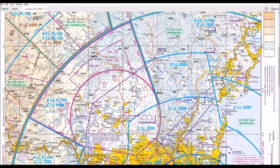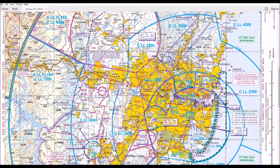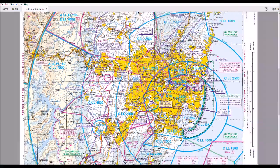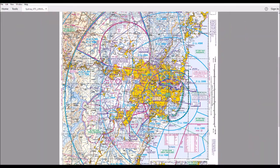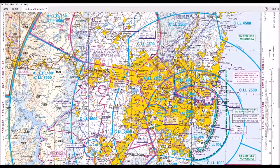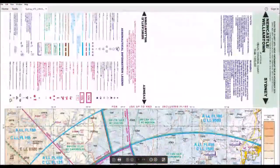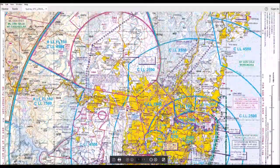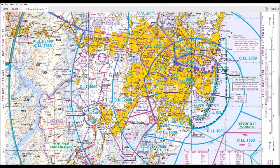Let's scroll down a bit and have a look at a very obvious feature of this chart. You will notice that there are circles coming out from Sydney airport. There's no issue figuring out who's the center of attention — it's obviously Sydney airport. And that's why it's called the Sydney VTC, the Sydney visual terminal chart, for pretty much Sydney airport and the little airports around it as well.